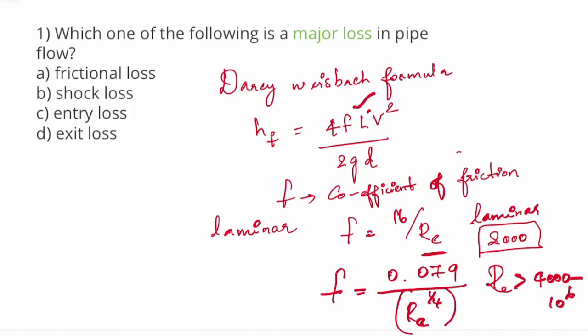L is the length of the pipe, V is the velocity of the flow, g is acceleration due to gravity, and D is the diameter of the pipe. So head loss value for friction, major loss is friction loss.